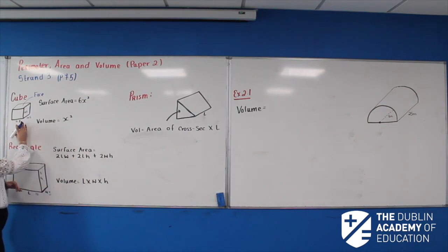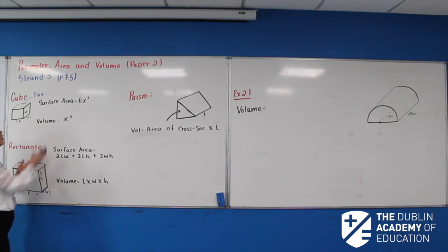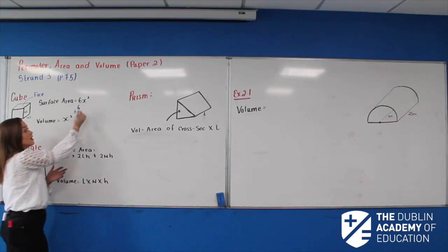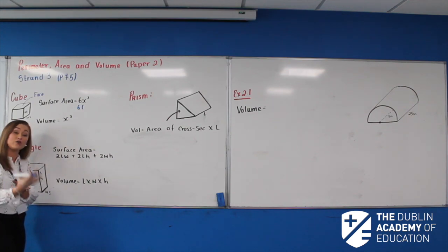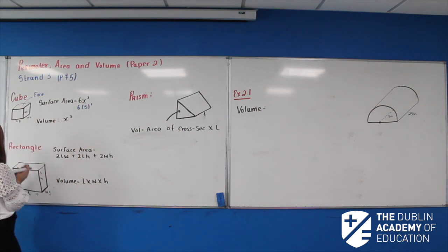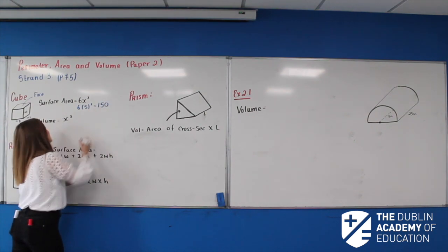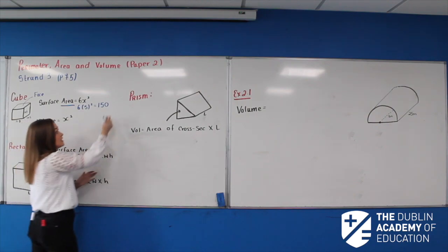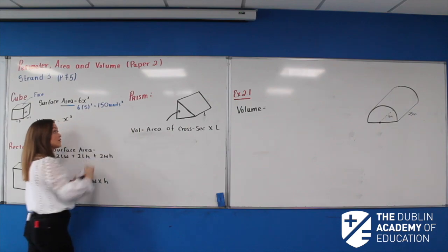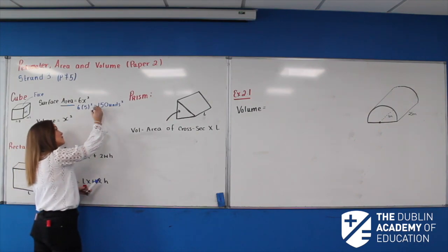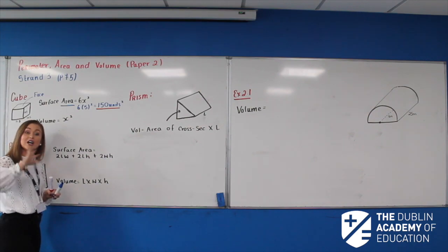Starting with the surface area of this cube where all sides are five: the formula is 6 times x squared — there are six faces on a cube, times the area of a square. So that's 6 times 5 squared, which gives me 150. Remember it's surface area, so anything area is squared — I'll put units squared. We don't want to lose that mark for forgetting.